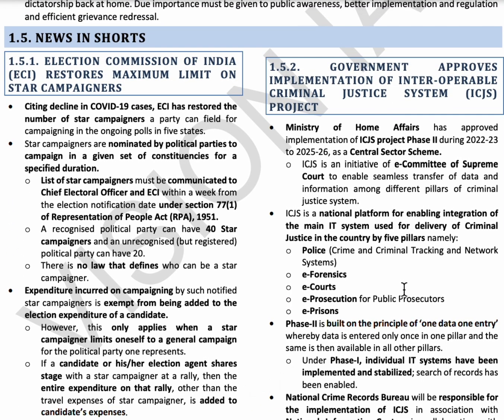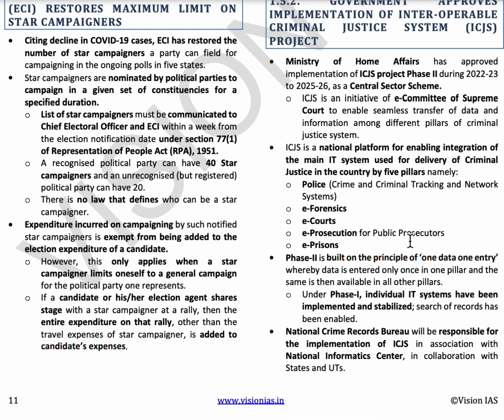The next topic is the Government's approval of the Interoperable Criminal Justice System Project. Under this project, data of criminals is shared among the five pillars of the criminal justice system under the e-Committee of the Supreme Court: Police, e-Forensics, e-Courts, e-Prosecution for public prosecutors, and e-Prisons. The National Crime Records Bureau and National Informatics Centre, in collaboration with all states and UTs, will implement this under the principle of one data, one entry.